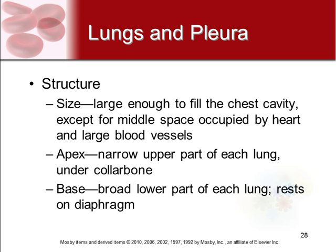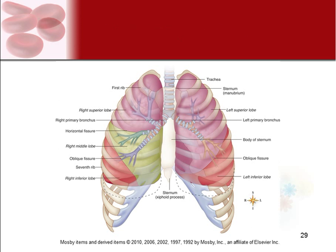Your lungs are large enough to fill the chest cavity except for the middle space where your heart and large vessels are. The apex of your lungs is the narrow upper part, and the base is the broad lower part that rests on your diaphragm — also where the apex of your heart rests, so the heart and lungs are a little backwards in that sense. Your left lung is divided into an upper and lower lobe, and your right lung is divided into upper, middle, and lower lobes.